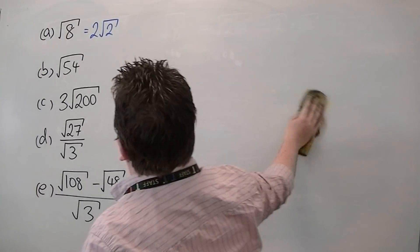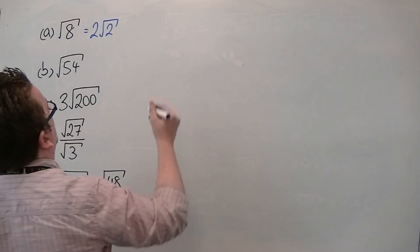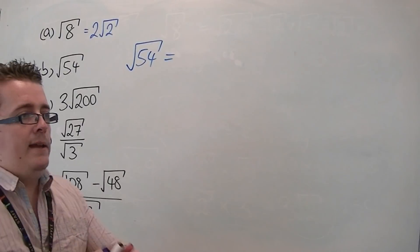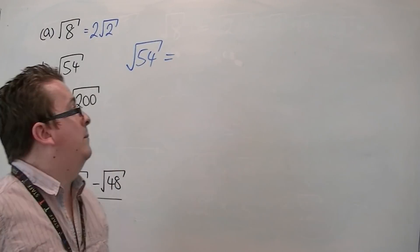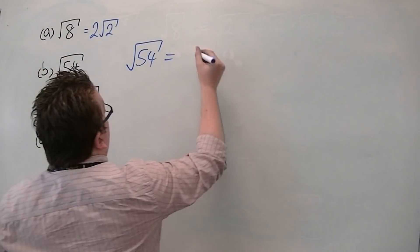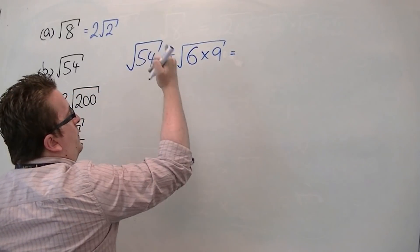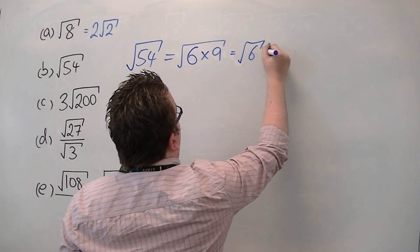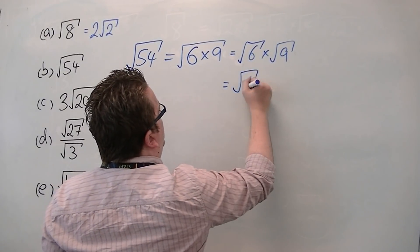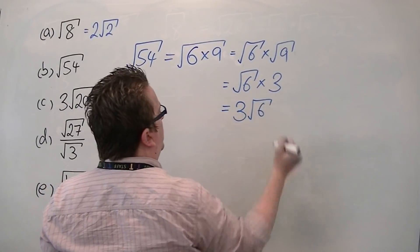So next up, root 54. So the square root of 54. It's really looking for a number that is the square number that fits into 54, and that would be 9 in this case. 6 times 9 is 54, so this is the same as root 6 times root 9, which is the same as root 6 times 3.